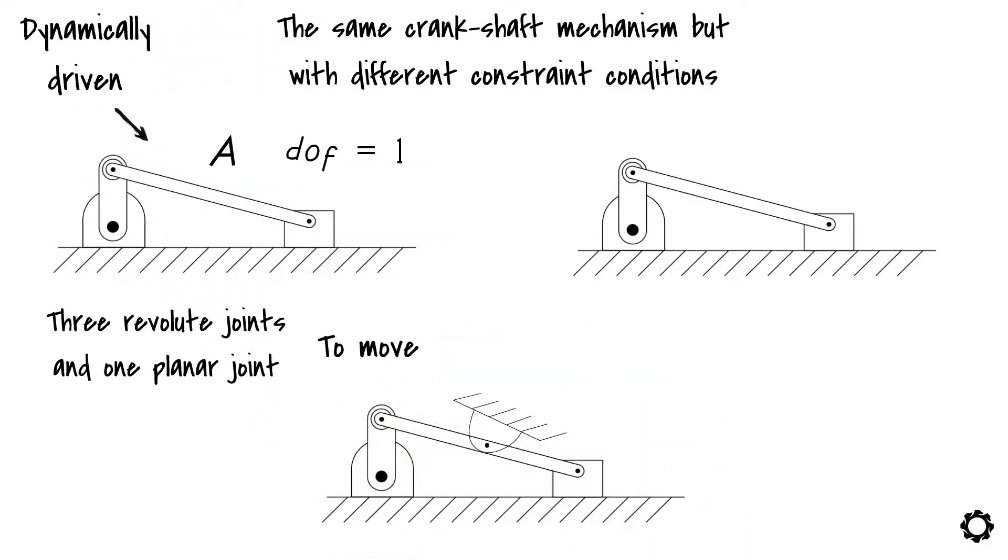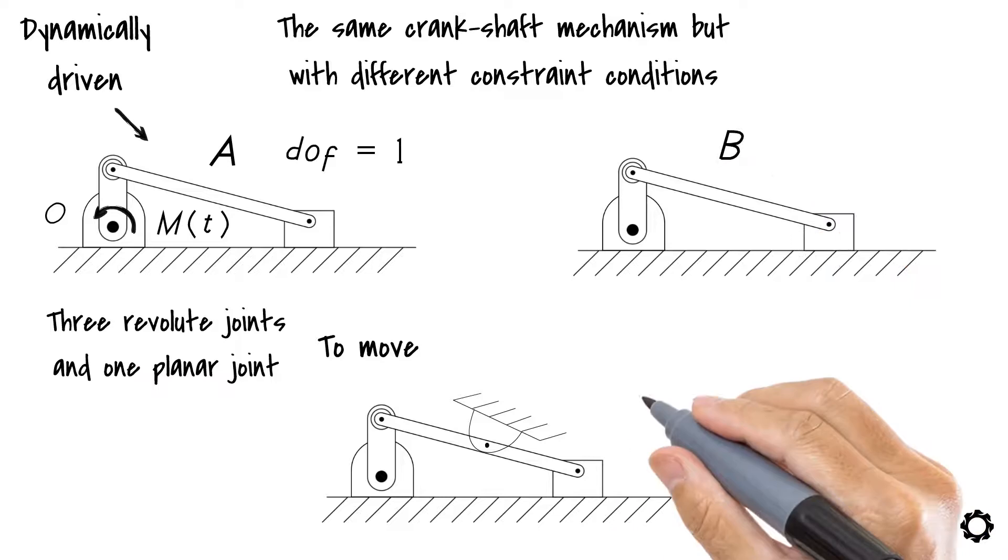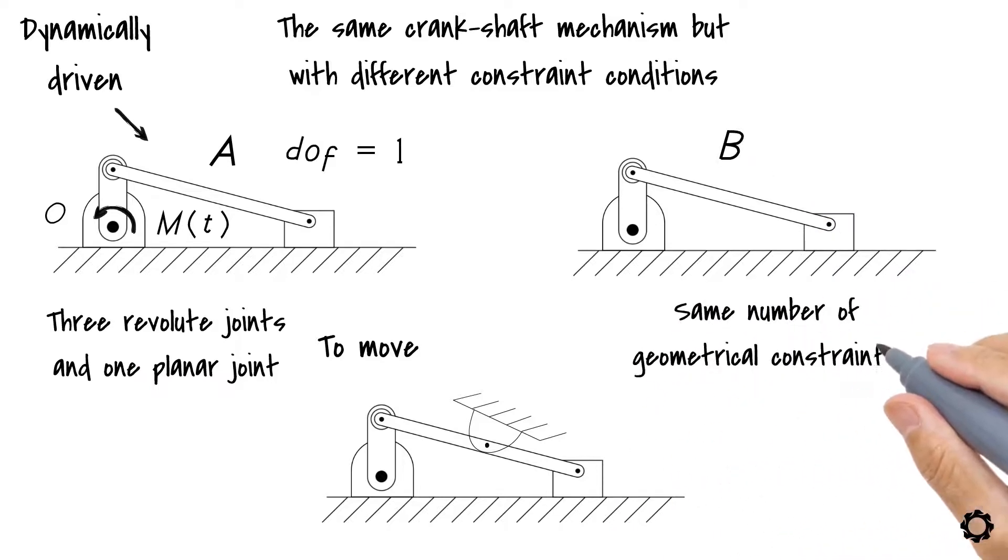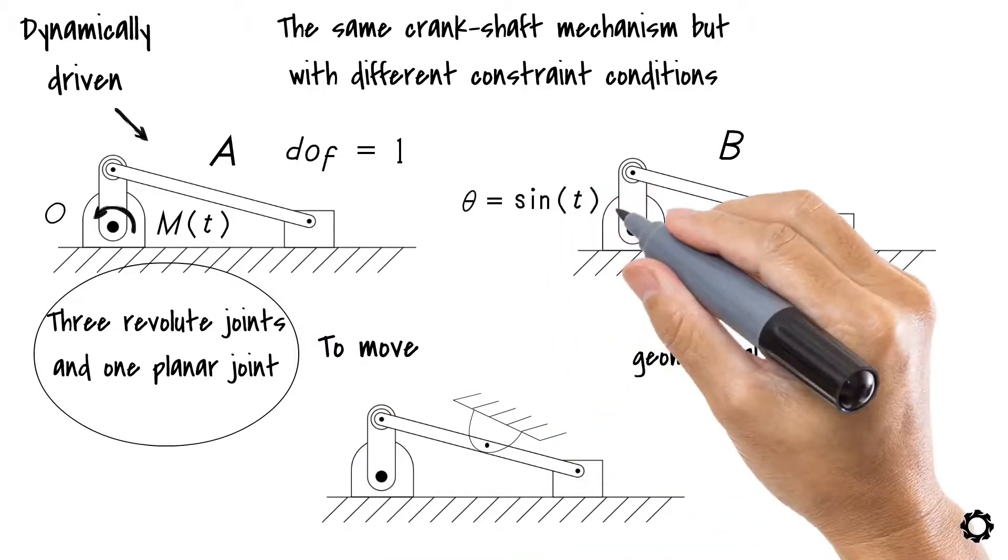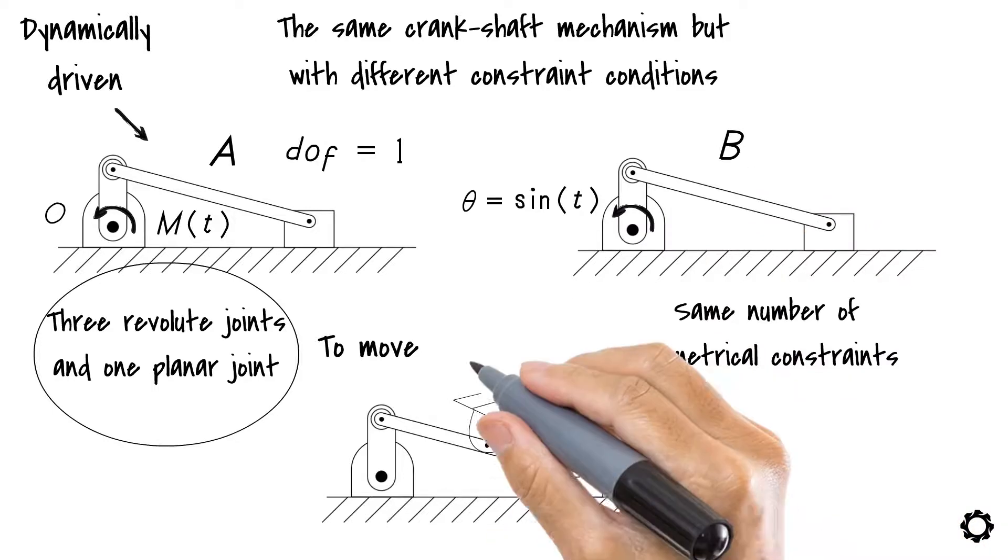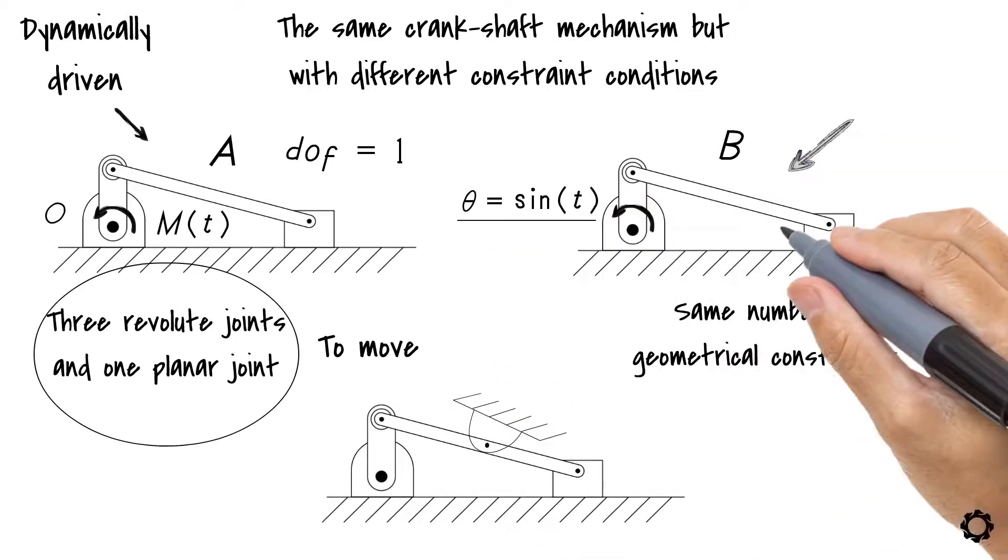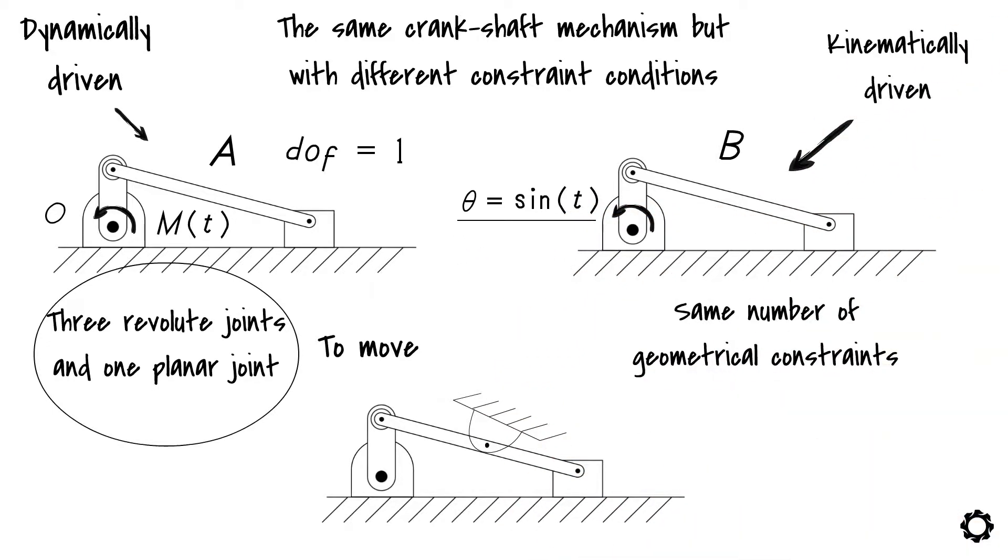This means to move the system we will need to provide a torque around point O. In system B, we have the same number of geometrical constraints as in the case of system A. But additionally, we have a motion input imposed as a constraint on the crank. This additional motion constraint makes our system a kinematically driven system. In this case, we need to employ a kinematic analysis to solve the system's positions, velocities and accelerations.